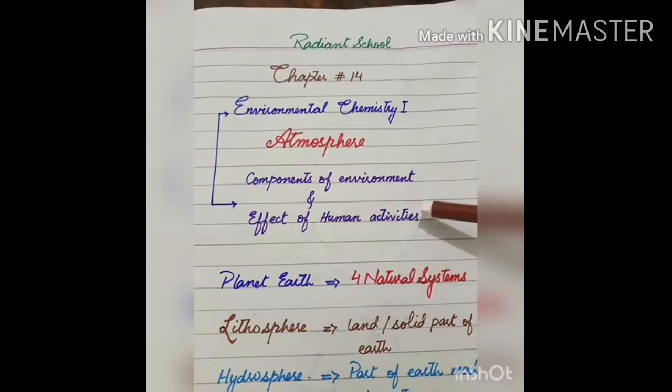Due to human activities, what are the changes which takes place in the normal composition of environment and due to those changes, what is the effect on different living and non-living things on earth?